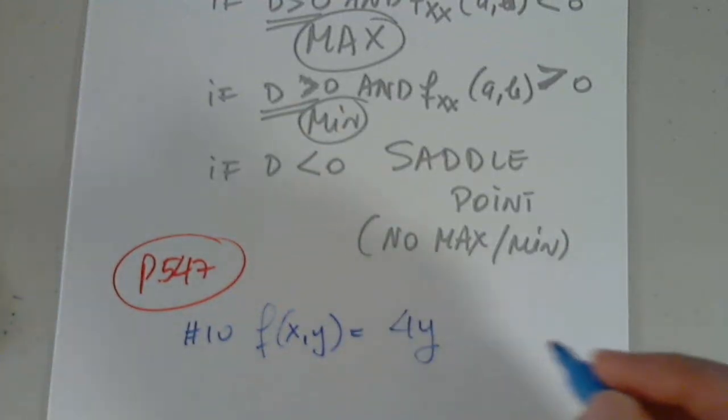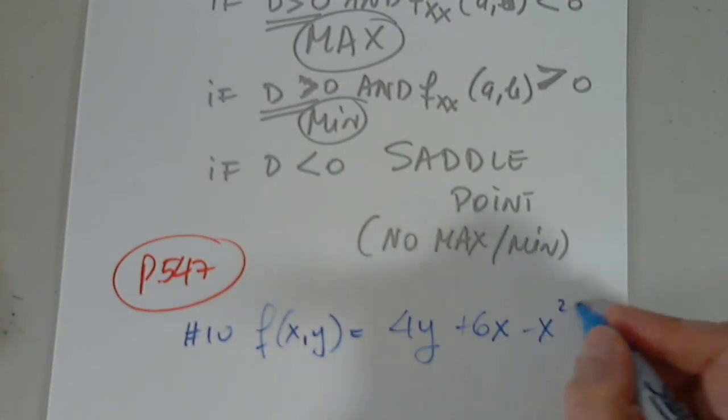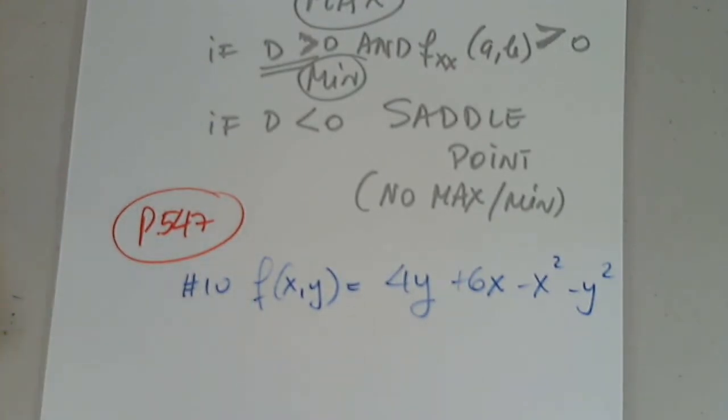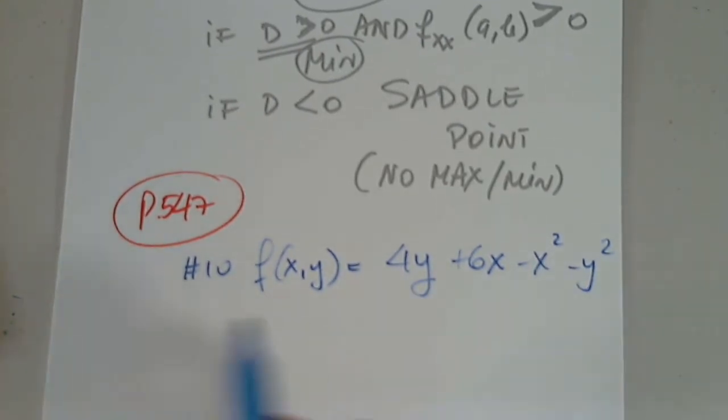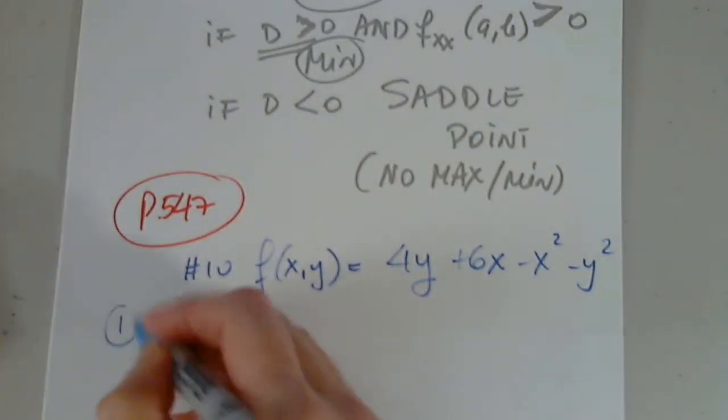The function is given to us as 4y plus 6x minus x squared minus y squared. We're asked to find max min. It can have both, or it can have one, or it can have none. So in step number one, I have to determine all these. So let's determine them.